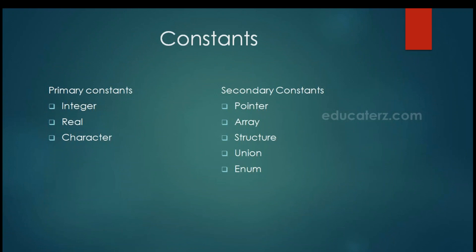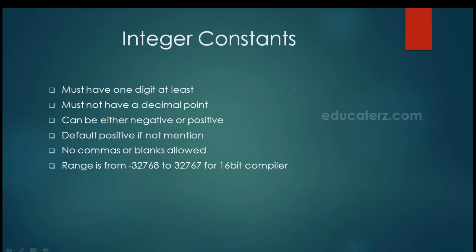Now, there are two types of constants: primary constants and secondary constants. Primary constants are integer, real, and character constants. Secondary constants are pointer, array, structure, union, and enum. We will see secondary constants in another video, but right now we will discuss the primary constants, starting with integer constants.